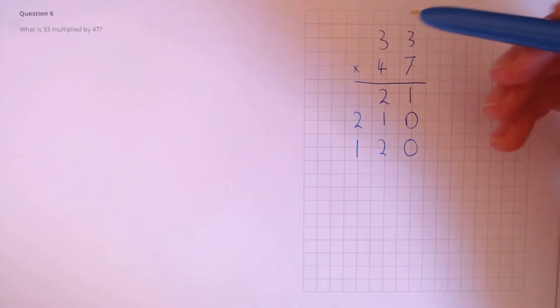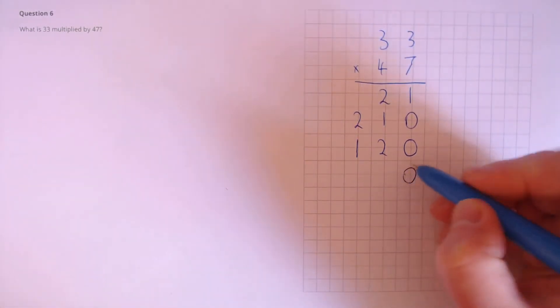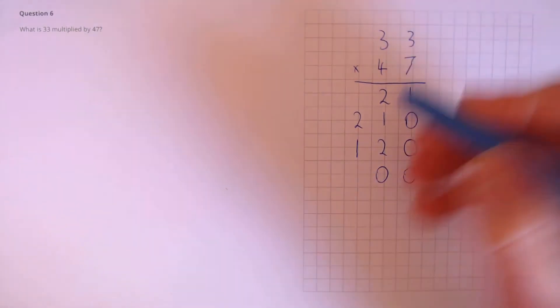Next, we're going to multiply two tens columns. So that's 30 times 40. Because we've got two tens columns now, we've got two zeros. 3 times 4 is 12.